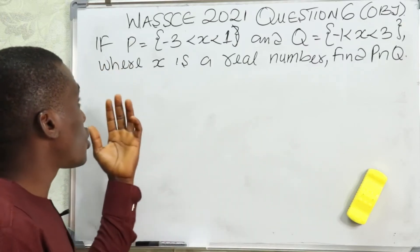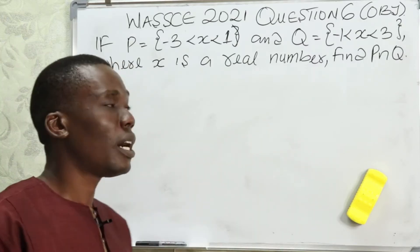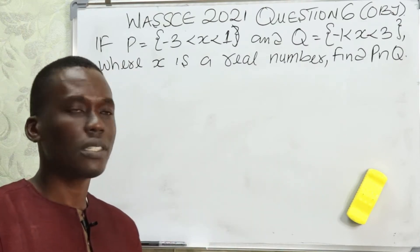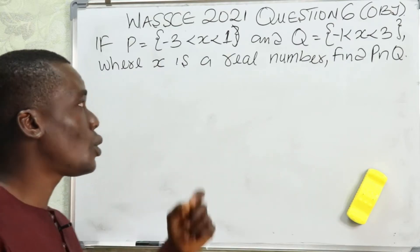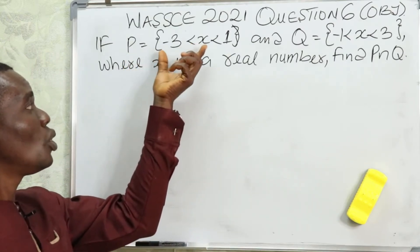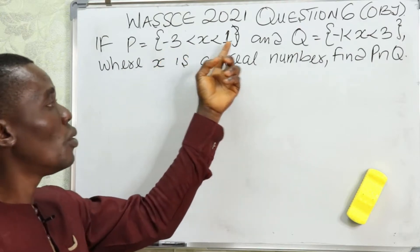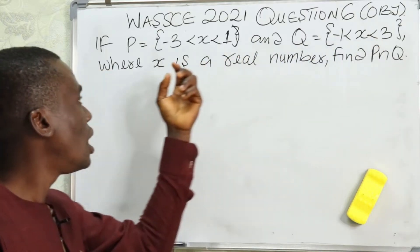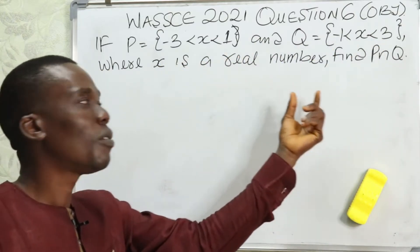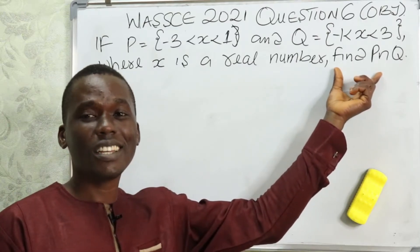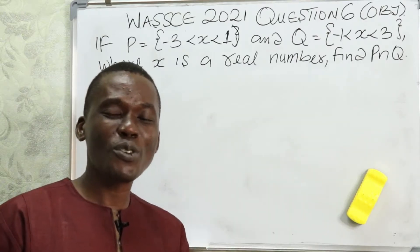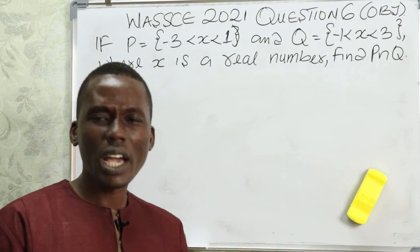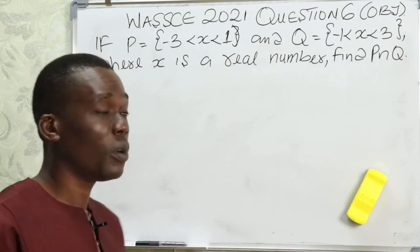Question number six is on set theorem, and in this question your knowledge about solving sets will be tested. You are given the value of P to be numbers between the range of minus three and one, and Q numbers between the range of minus one and three. You are told that x is a real number and you are asked to find P intersect Q. We are going to show you how to solve these questions in the simplest way.